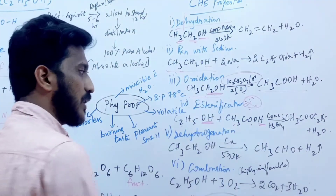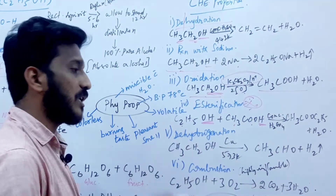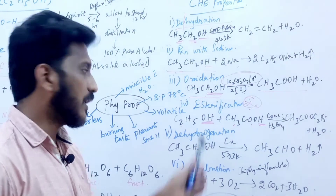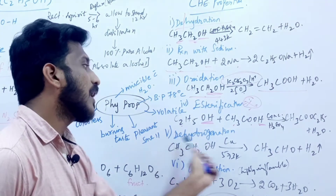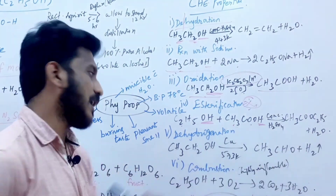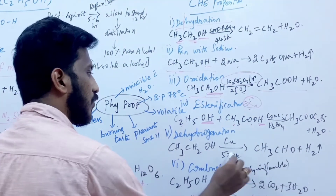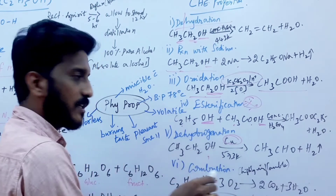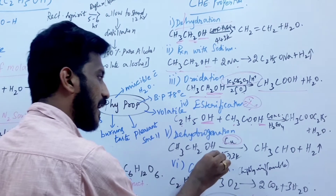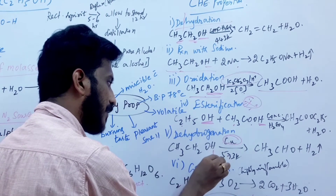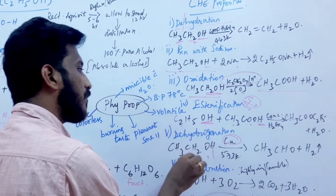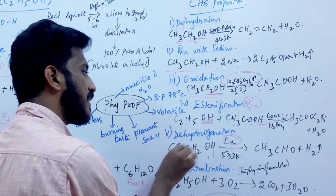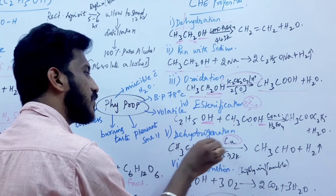Next is dehydrogenation, which means removal of hydrogen. When you add copper as a catalyst, hydrogen is removed from ethanol, giving CH3CHO — that is acetaldehyde.